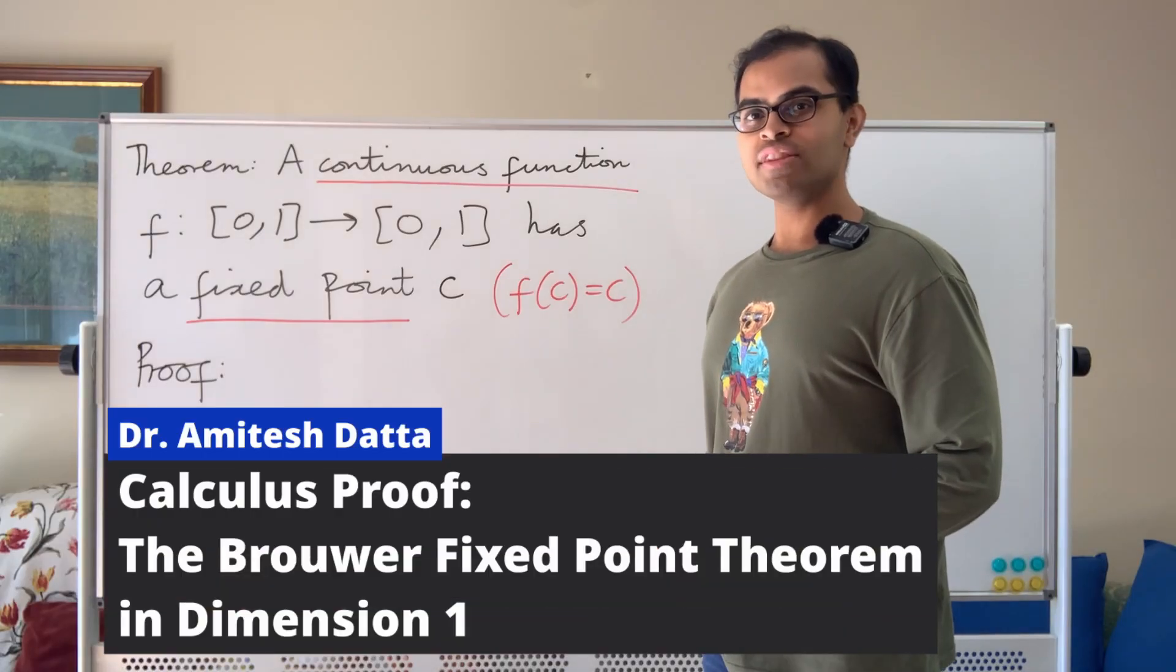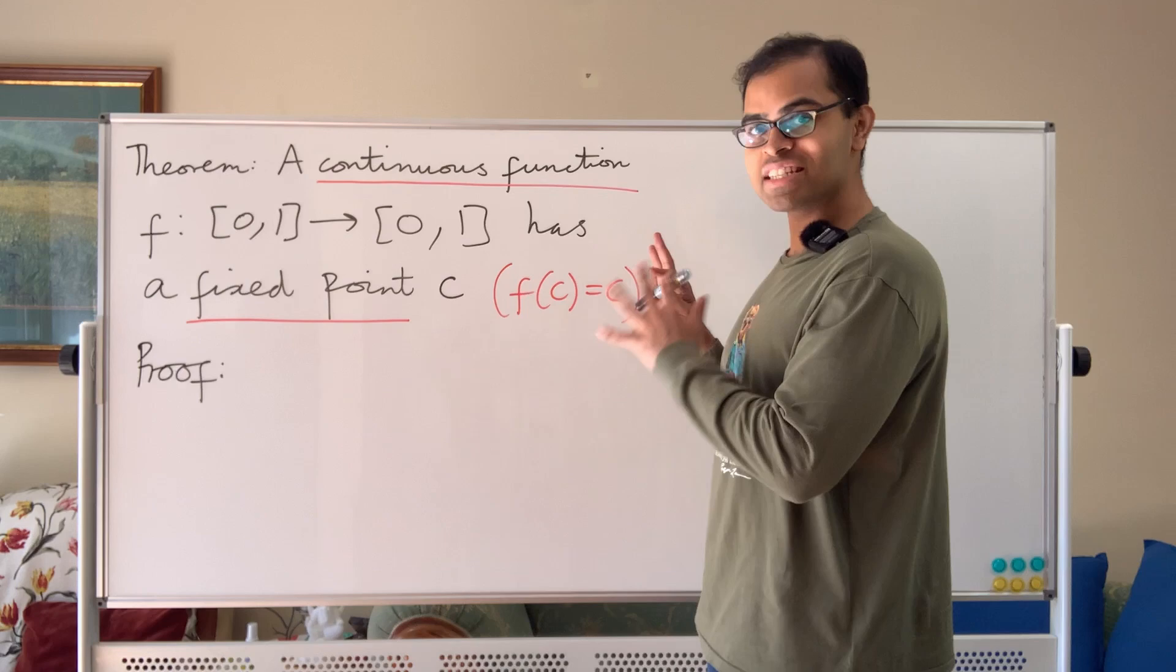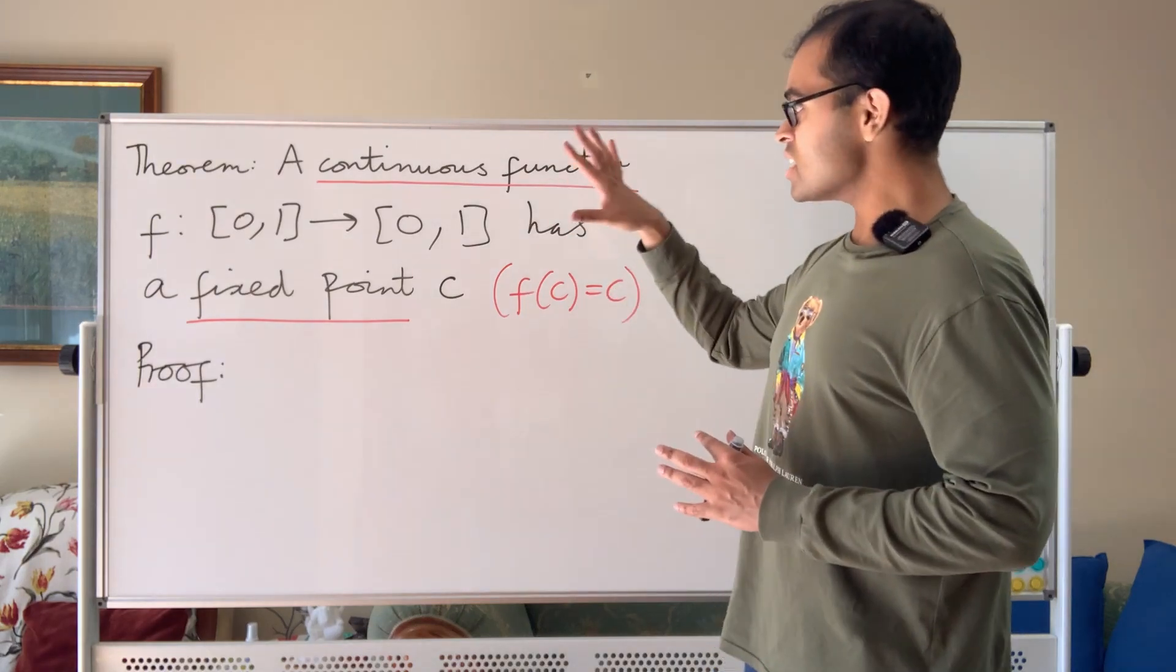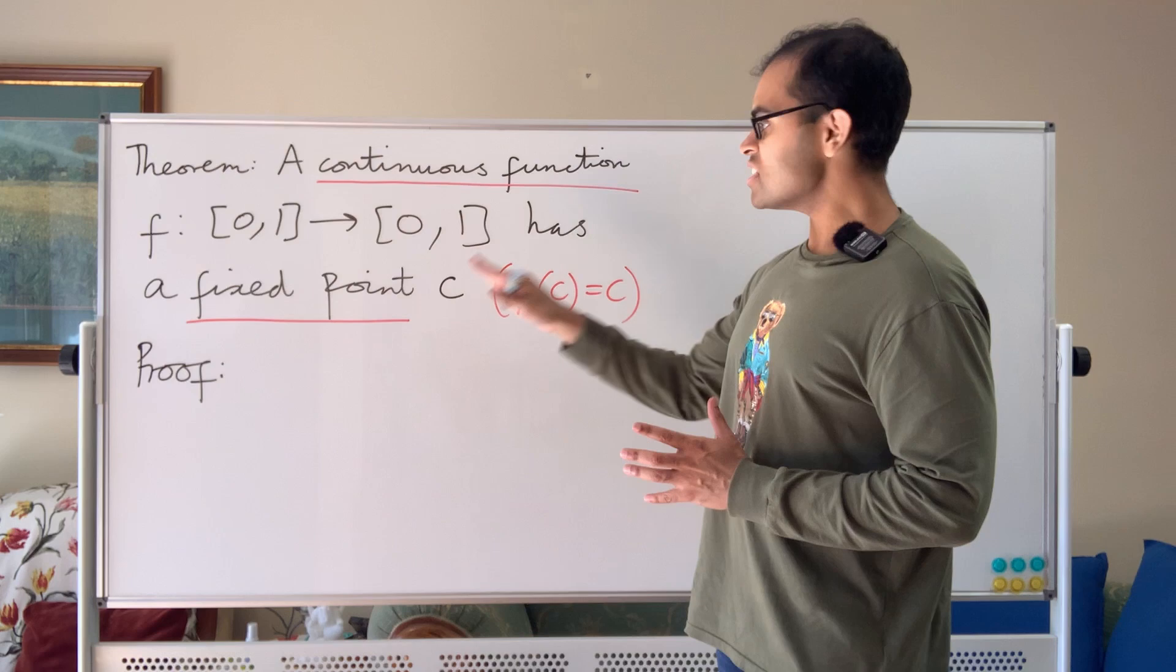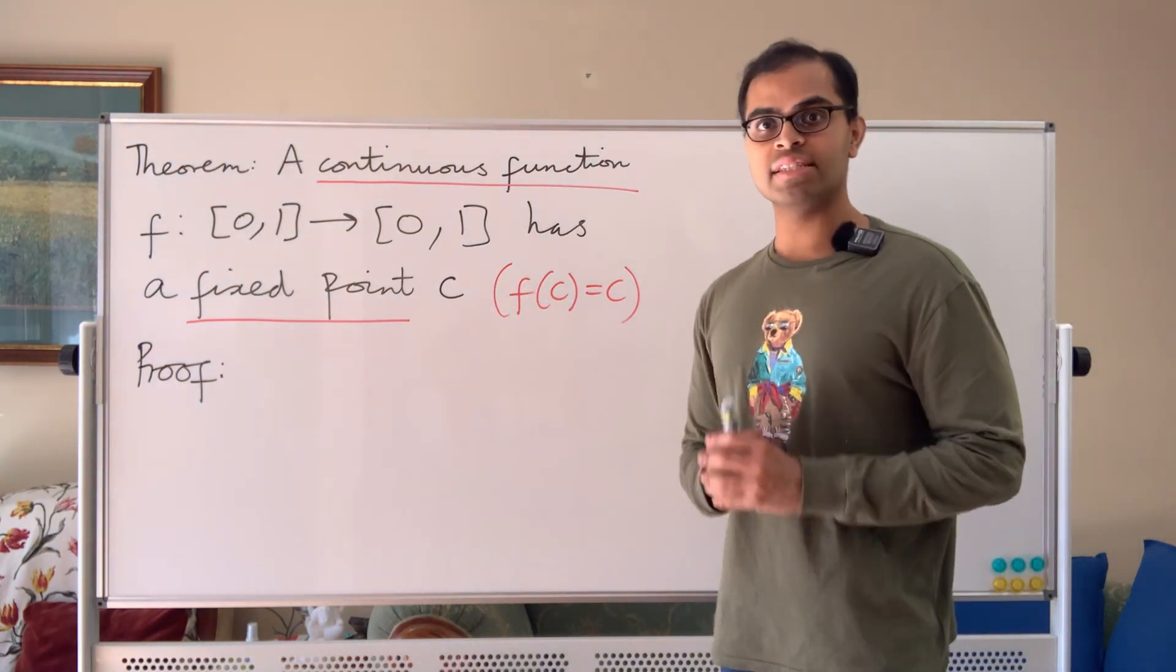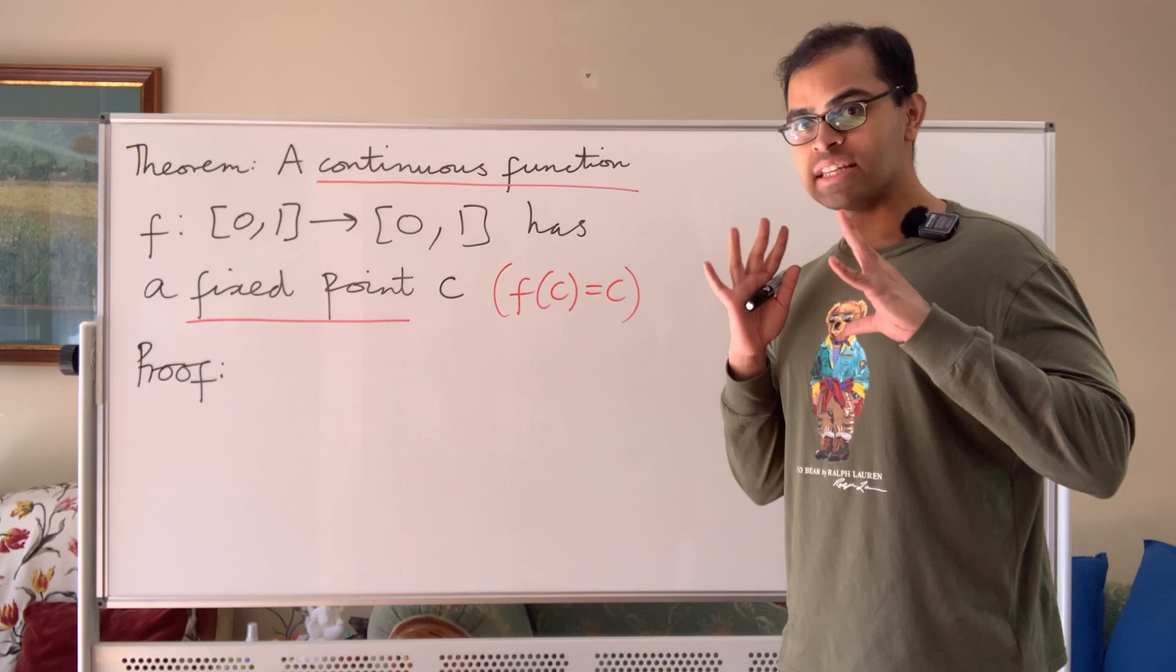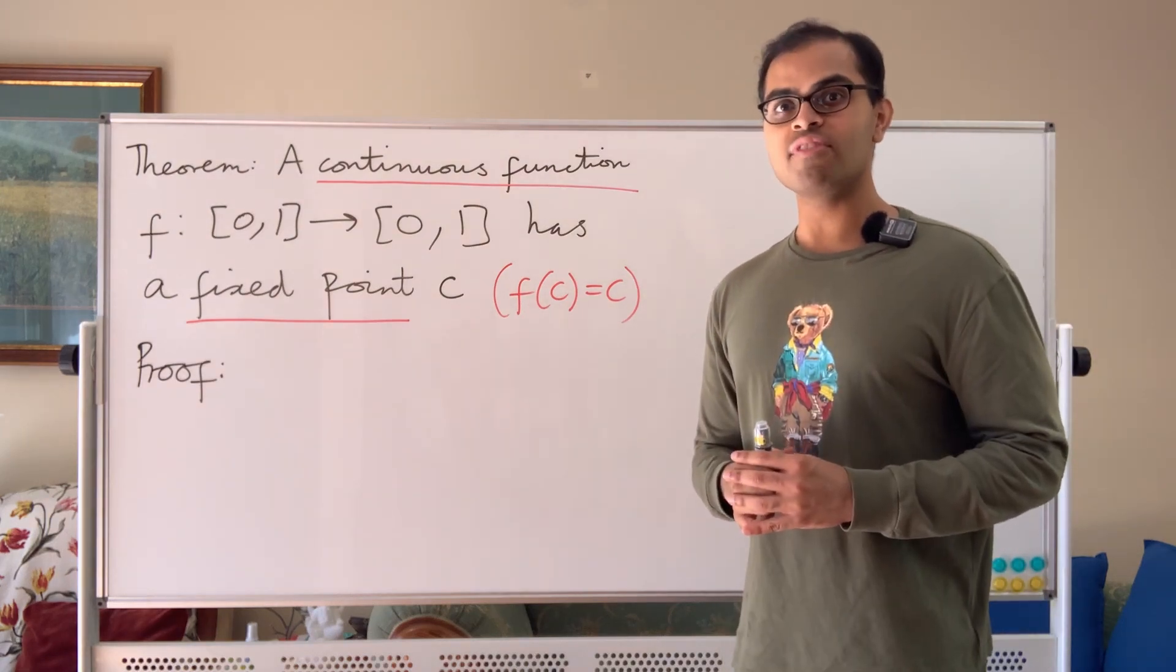We're going to prove the Brouwer Fixed Point Theorem in Dimension 1. That sounds fancy but it's actually a concrete statement in calculus. It states that a continuous function f from [0,1] to [0,1] has a fixed point c, so f(c) equals c for some c inside the interval. We're going to understand the intuition behind this, which is super beautiful, and then rigorously give a proof.